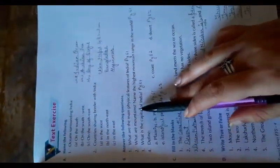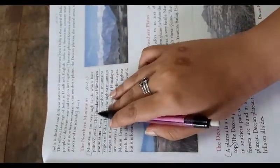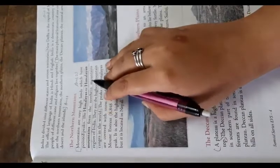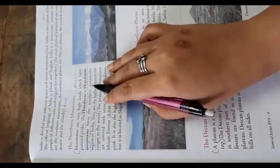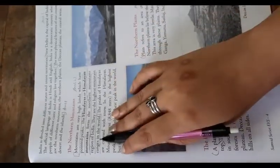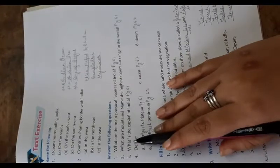Now question number two: what are mountains and name the highest mountain range in the world, is on page number 61 only. Now the mountains are very high lands which have pointed peaks. The Himalayas and the Himalayan mountains form the northern mountain ranges of India. They are the highest mountain range in the world.